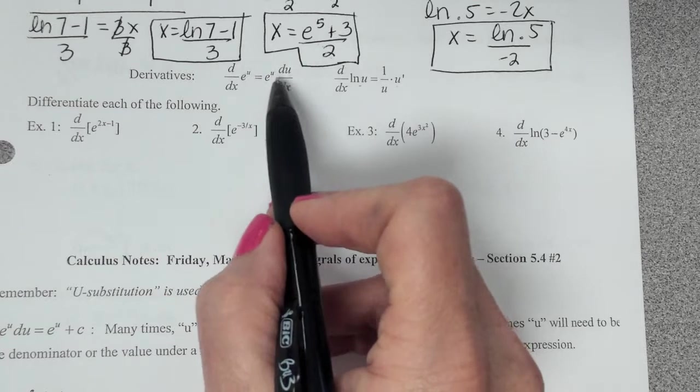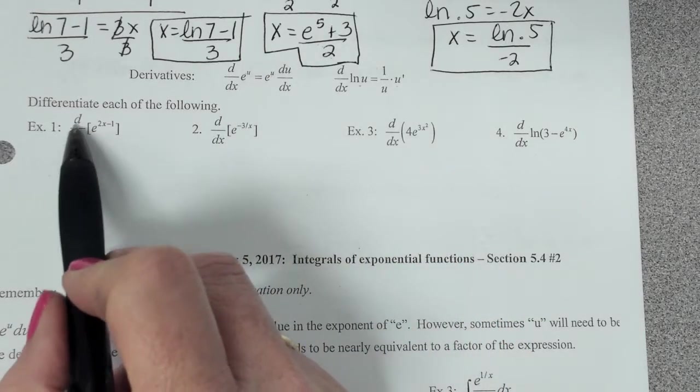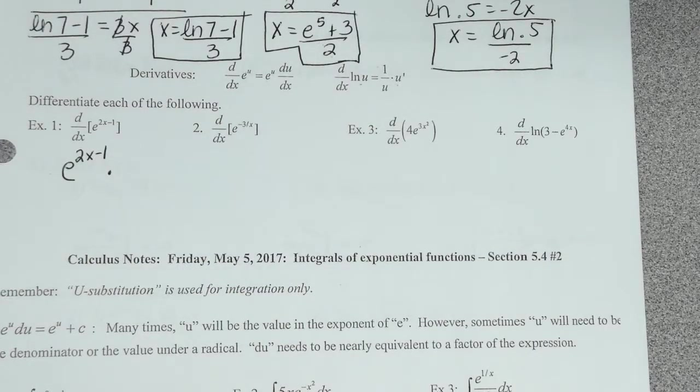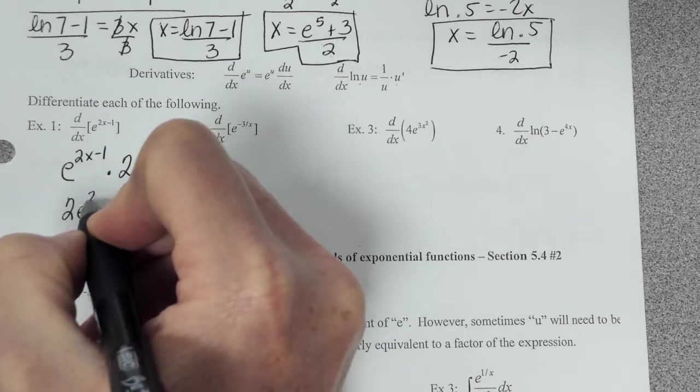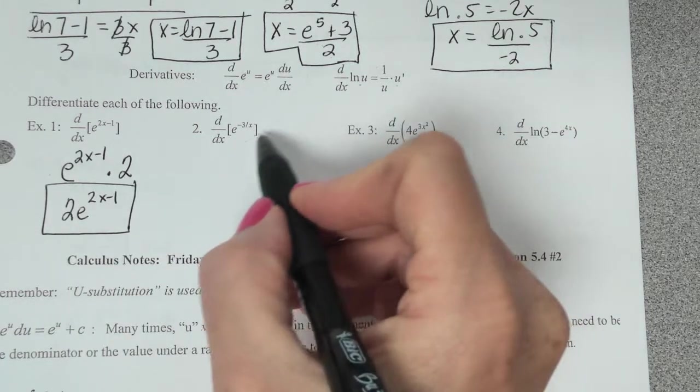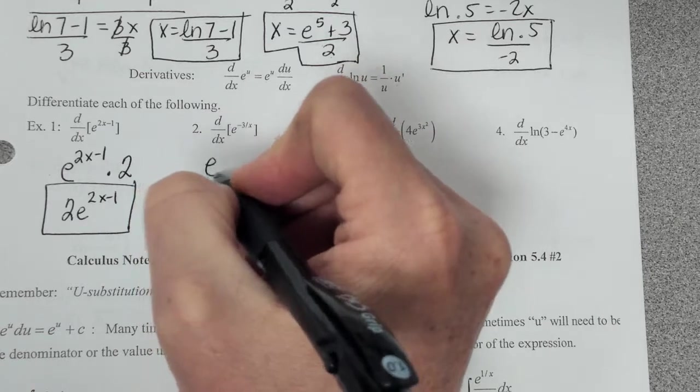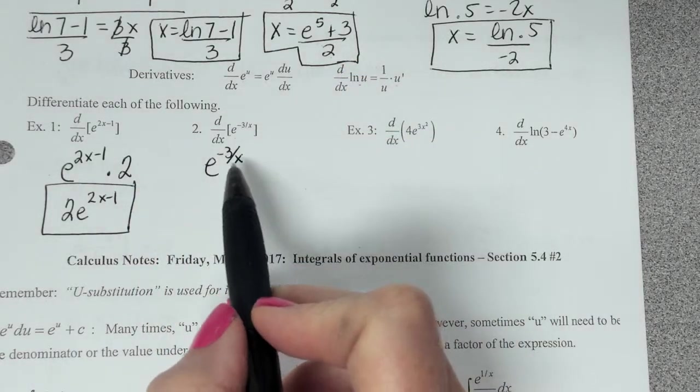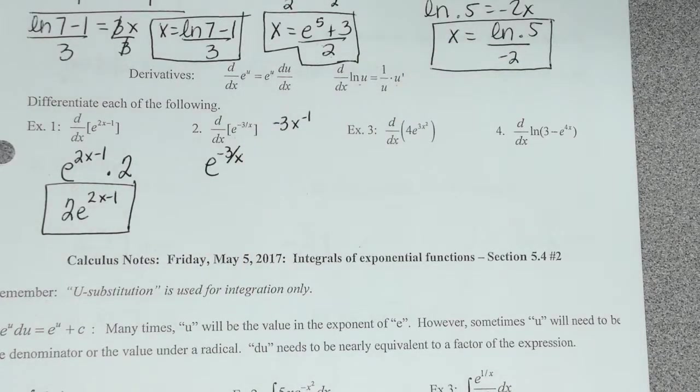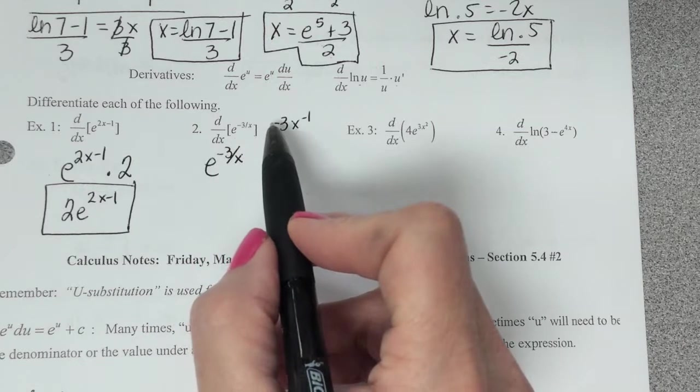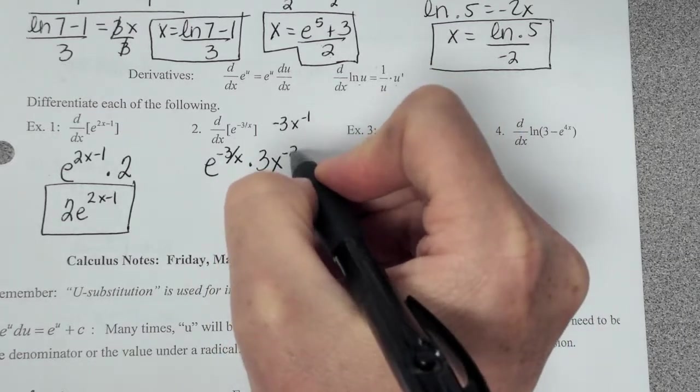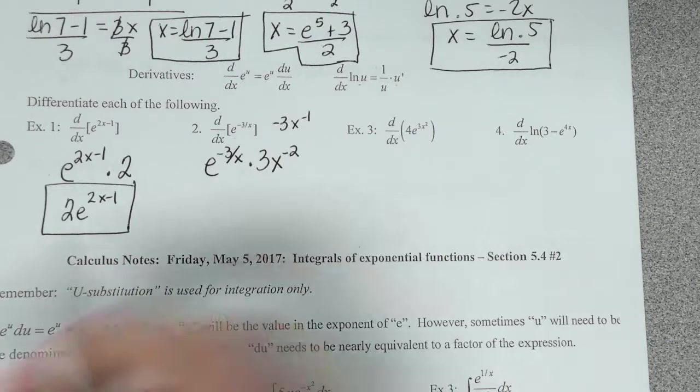So doing this one, the derivative of e to the u is going to be just e to the u times what? 2. So it's going to be 2e to the 2x minus 1. Number 2. The derivative of e to the u is e to the u. But now I have to do the derivative of this. I'm going to have to rewrite that as negative 3x to the negative 1 to be able to find the derivative of it. So the derivative of this then is negative 3 times negative 1, which is 3x. And then subtract 1, which would be negative 2.